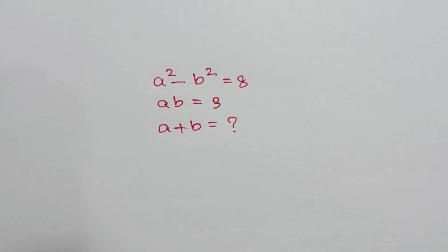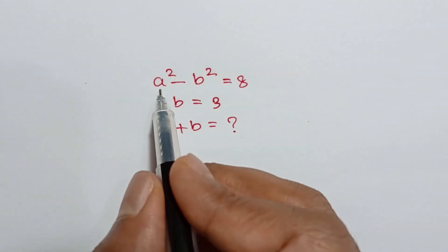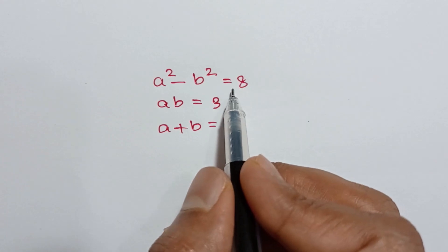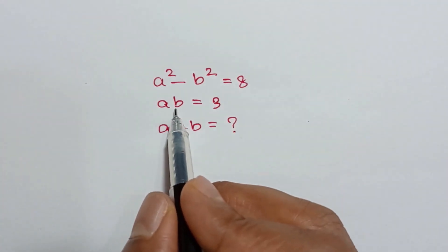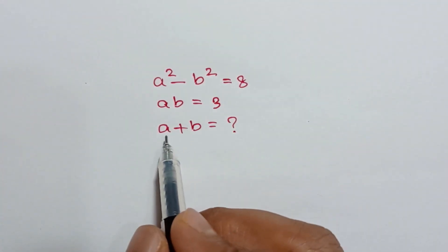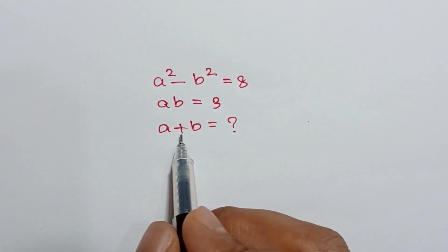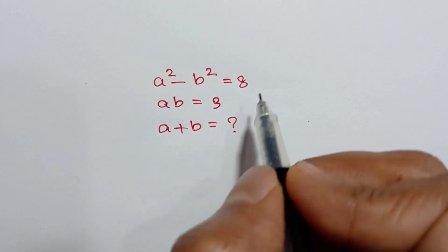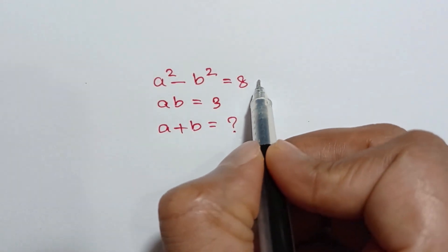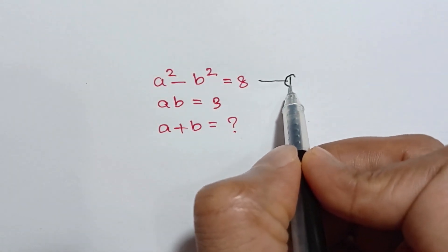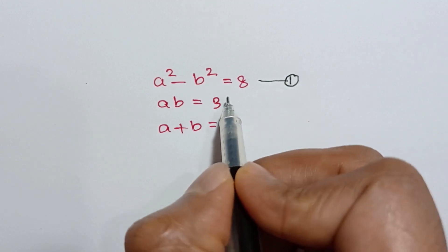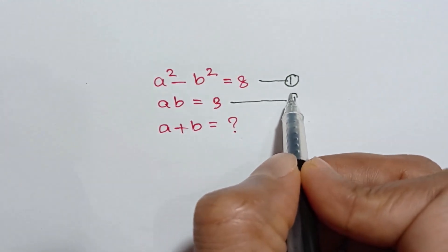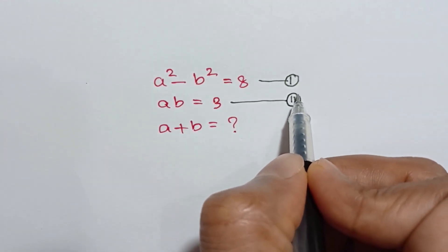Hi everyone. We are given a squared minus b squared is equal to 8 — call it equation number one — and ab is equal to 3, call it equation number two. We have to find the value of a plus b.